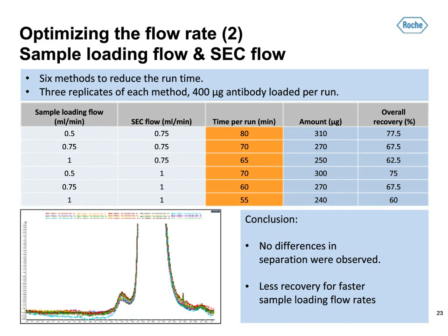The recoveries were between 60 and 77.5%. The achieved recovery of 67.5% with the optimal running time was good. When there are fewer than 24 samples to be purified, or time allows it, you can increase recovery by reducing the sample loading flow rate, as this has a much bigger impact on recovery than reducing the size exclusion flow rate. For all flow rates tested, the chromatographic resolution was acceptable.